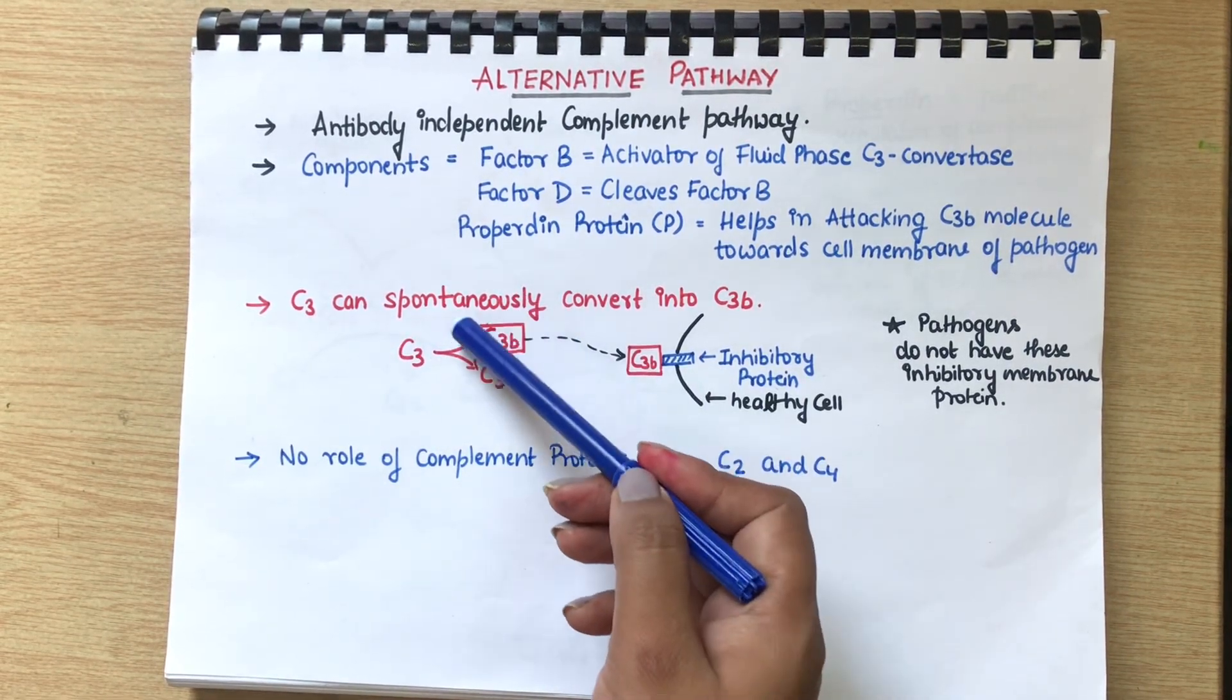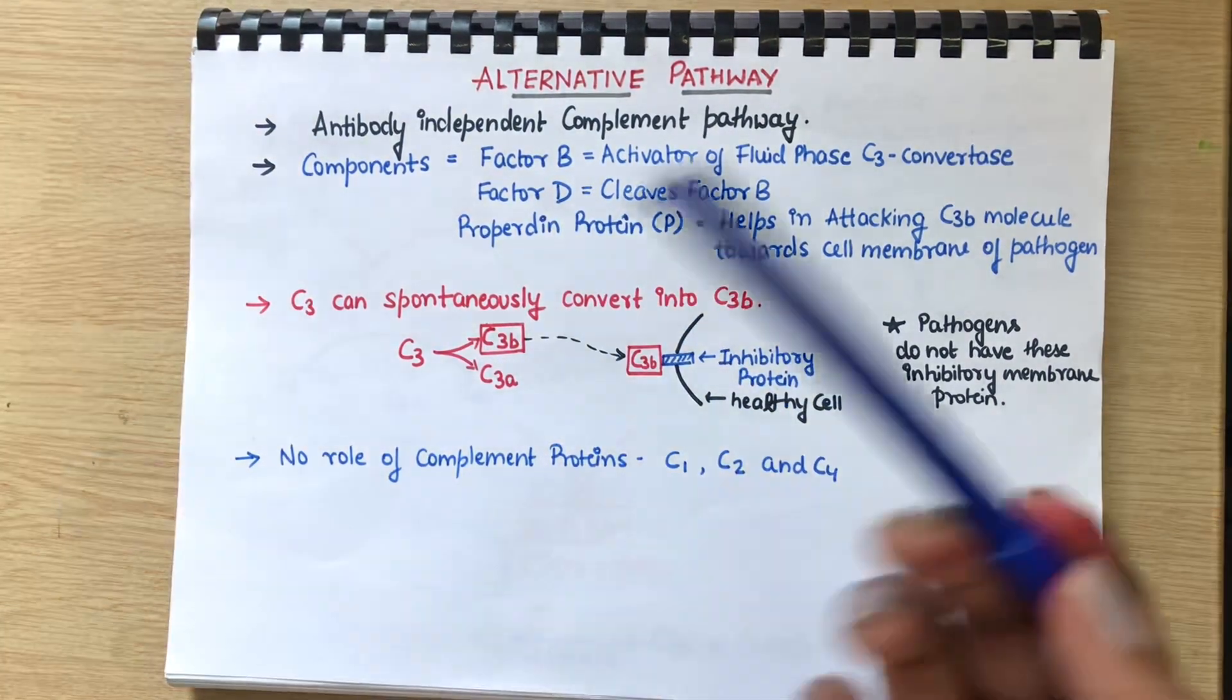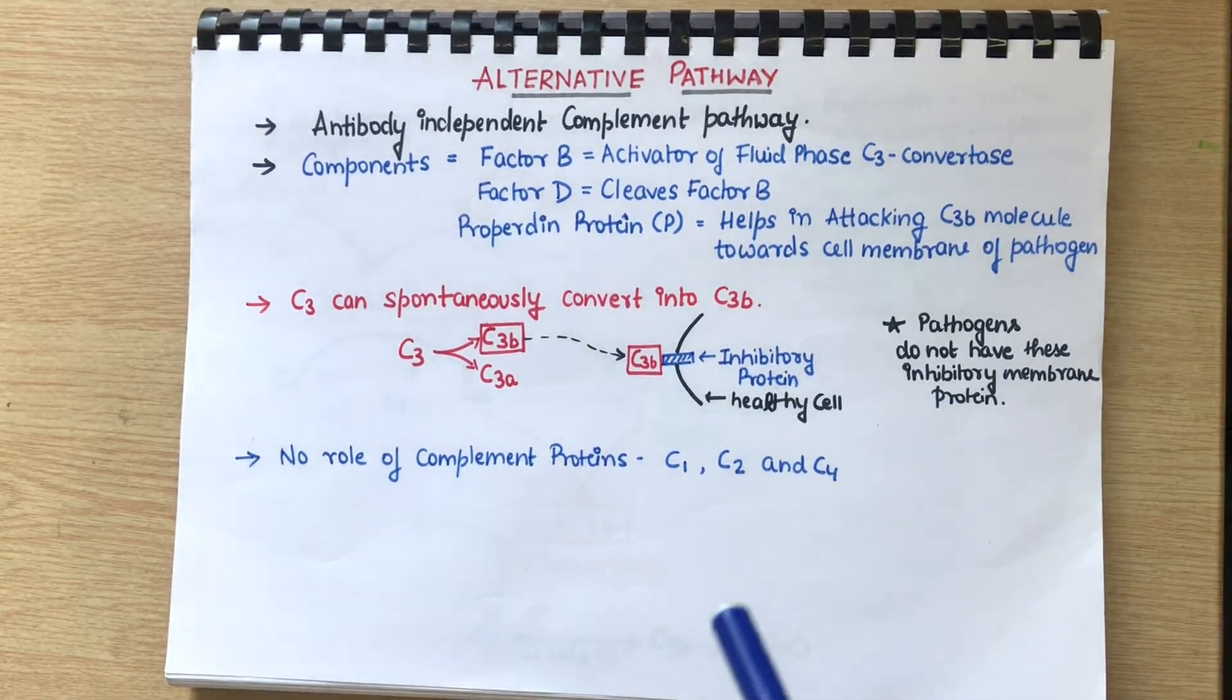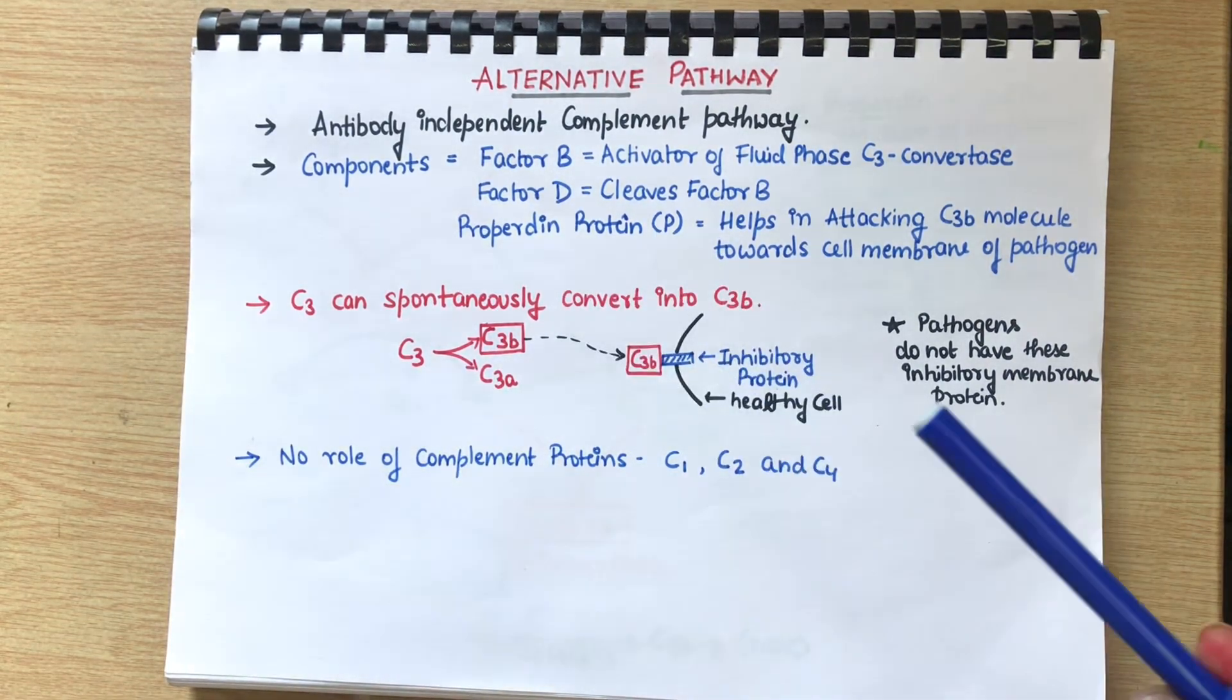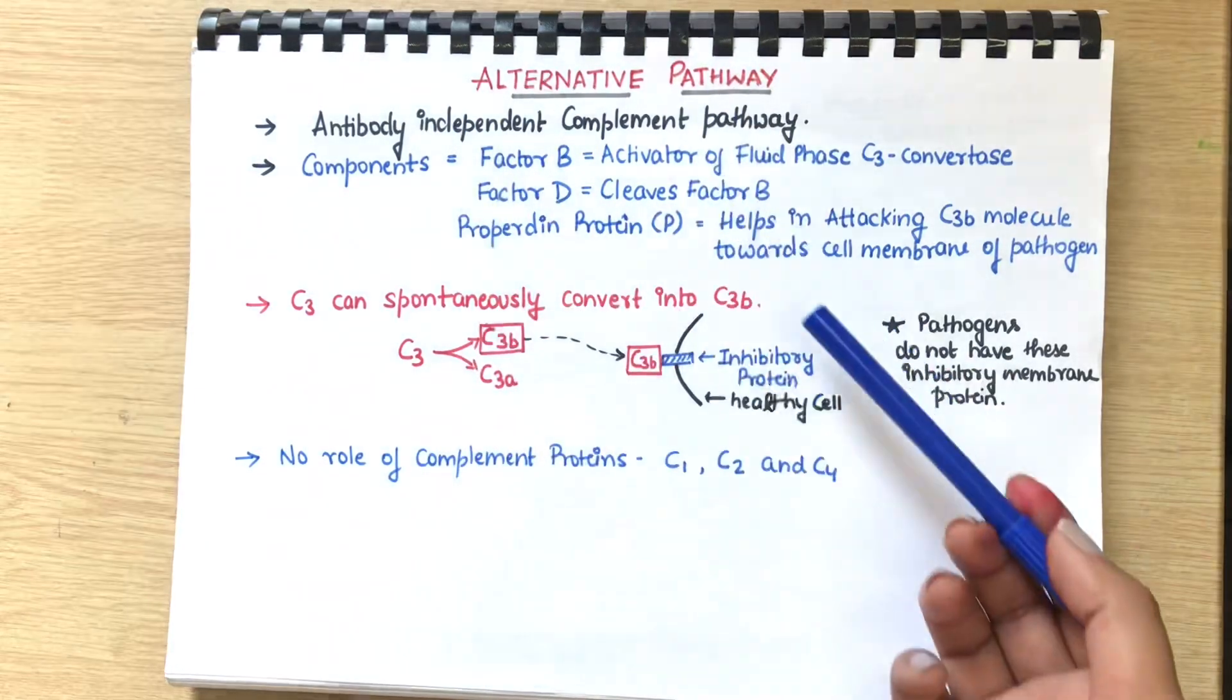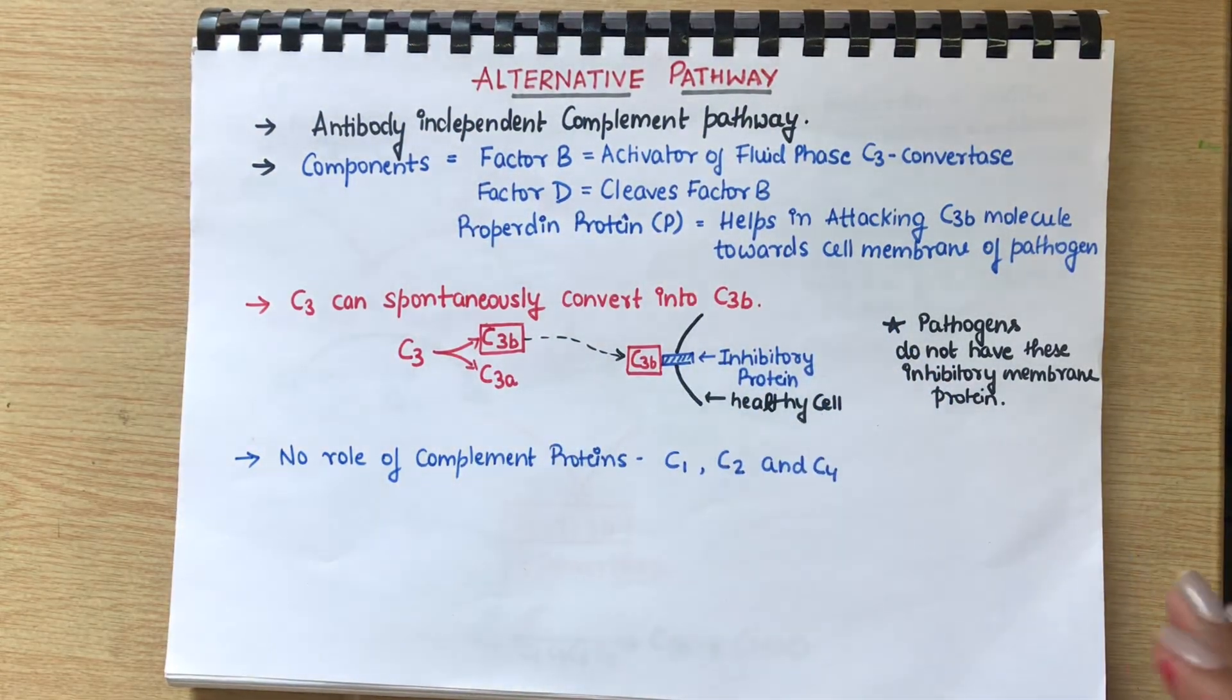Now you will think, if this is spontaneously activated and we don't need any antigen-antibody complex, that means this pathway can affect the healthy cells also.